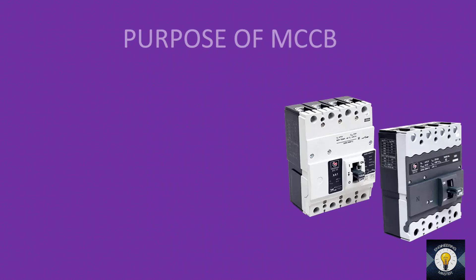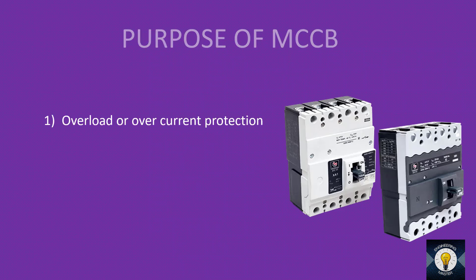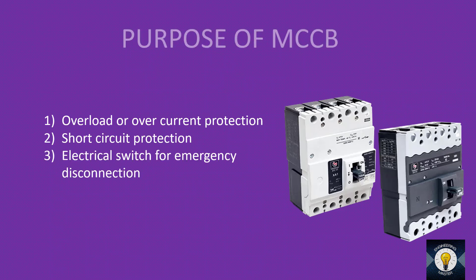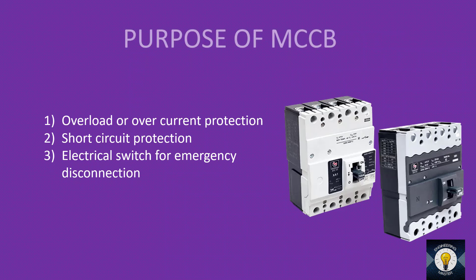What is the purpose of MCCB? The first one is overload or overcurrent protection. The second one is short circuit protection. The third one is as an electrical switch for emergency disconnection. If you want to disconnect a specific part in a circuit, we just turn off the MCCB in that circuit, so it acts as a switch for disconnection.